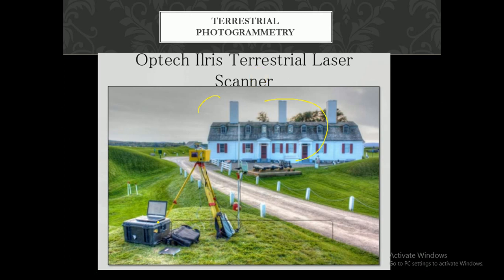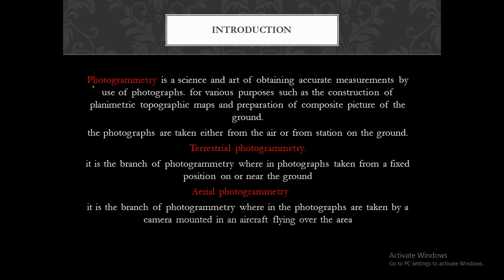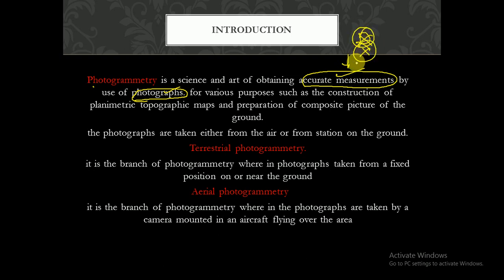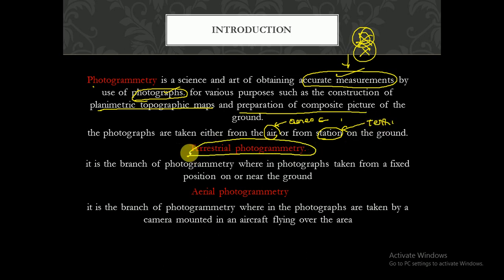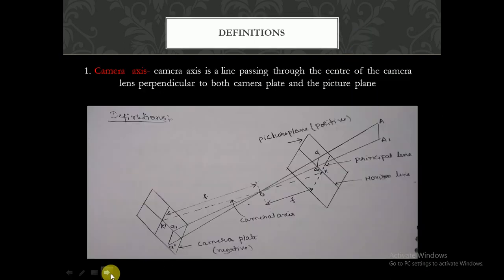So the definition of photogrammetry: it is the science of accurate measurements by using photographs — without entering the field or having physical contact — for purposes such as construction of planimetric and topographical maps and preparation of composite pictures of the ground. Photographs taken from the air give aerial photogrammetry; photographs taken from a ground station give terrestrial photogrammetry.